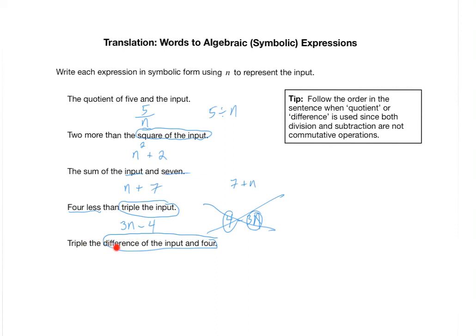So first, how do you write the difference of the input and 4? Well, that's N minus 4. And again, write it in that order that it shows up. Difference of input and 4. If it said the difference of 4 and the input, then this would be 4 minus N.